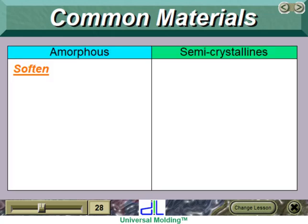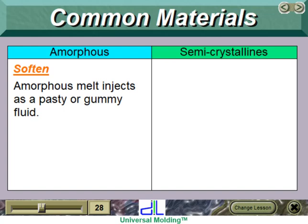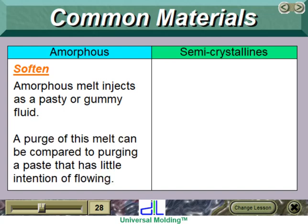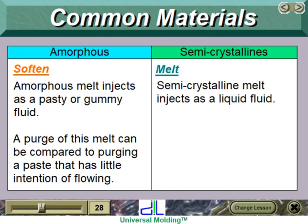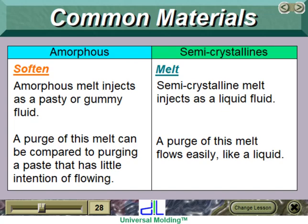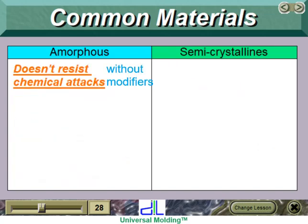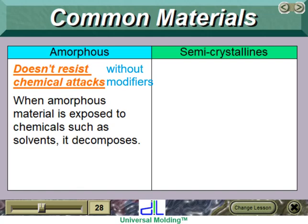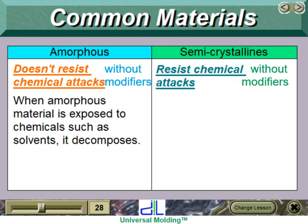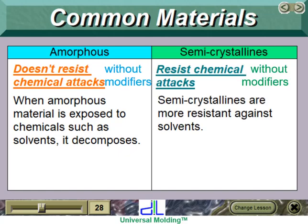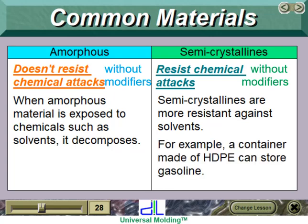Amorphous materials soften, and their melt injects as a pasty or gummy fluid — a purge of this melt can be compared to purging a paste that has little intention of flowing. Semicrystalline melt injects as a liquid fluid; a purge flows easily, like a liquid. Amorphous material doesn't resist chemical attacks — when exposed to chemicals such as solvents, it decomposes. Semicrystallines are more resistant against solvents. For example, a container made of HDPE (high-density polyethylene) can store gasoline.